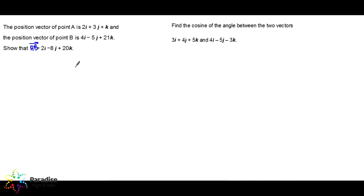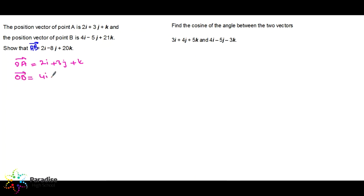The position vector of point A is 2i + 3j + k. When they say position vector, you write OA = 2i + 3j + k. The position vector of point B — when they say position vector, you write OB = 4i − 5j + 21k. The question is: what is AB?